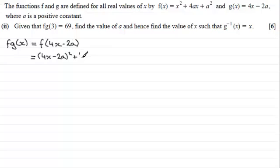So we're going to have in place of x², 4x minus 2a all squared, and then we've got plus 4ax, so it's going to be plus 4a and again in place of x I'm going to write 4x minus 2a, and then we have the constant plus a² on the end there.